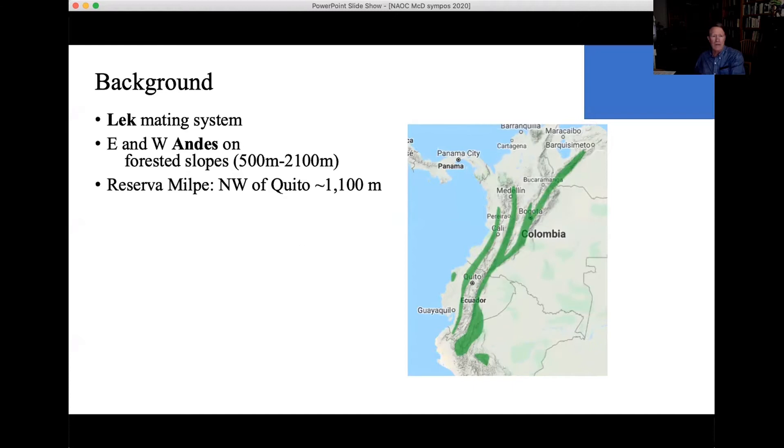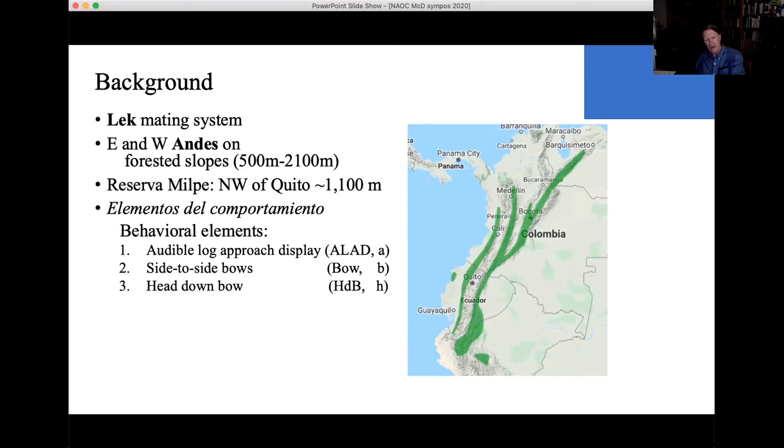I'm going to talk about four main behavioral elements, but I'll have several others, for example, in network analysis. Audible log approach display, you'll see a gorgeous video by Nick of that. ALAD, we call them. I can abbreviate that with an A for reasons you'll see soon. Side-to-side bows with a B, head-down bows with an H, neck twists with an N.